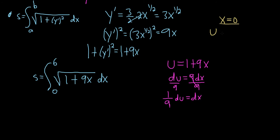we'll take the 0 and plug it into our formula for u. So 1 plus 9 times 0. So u is equal to 1 plus 0, which is 1.